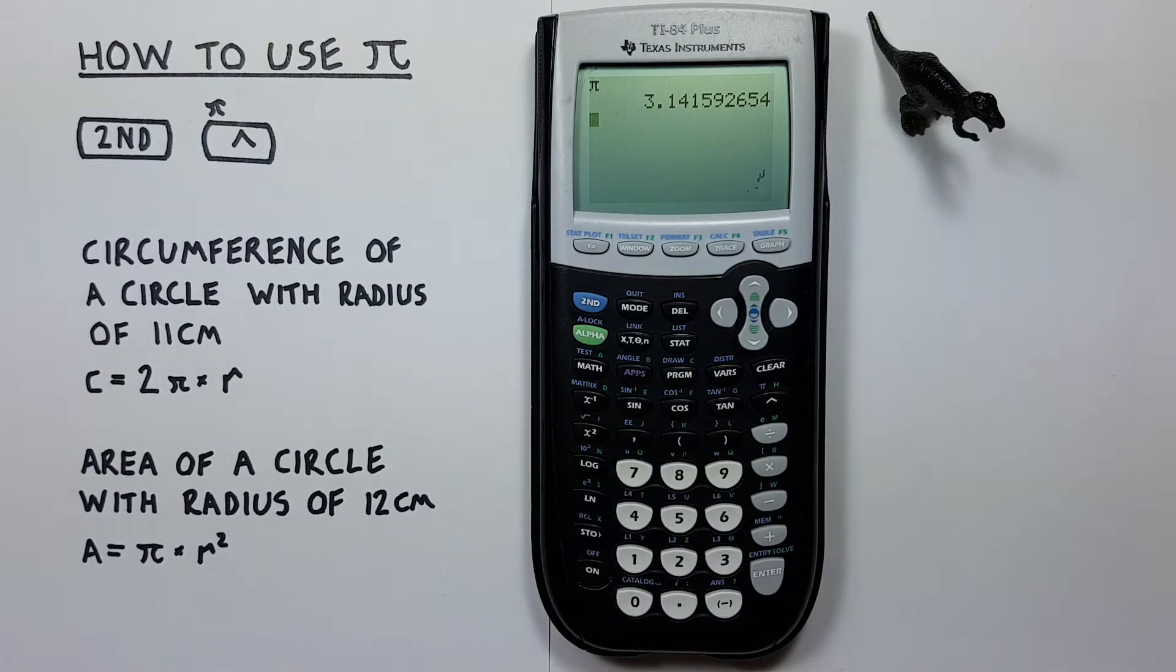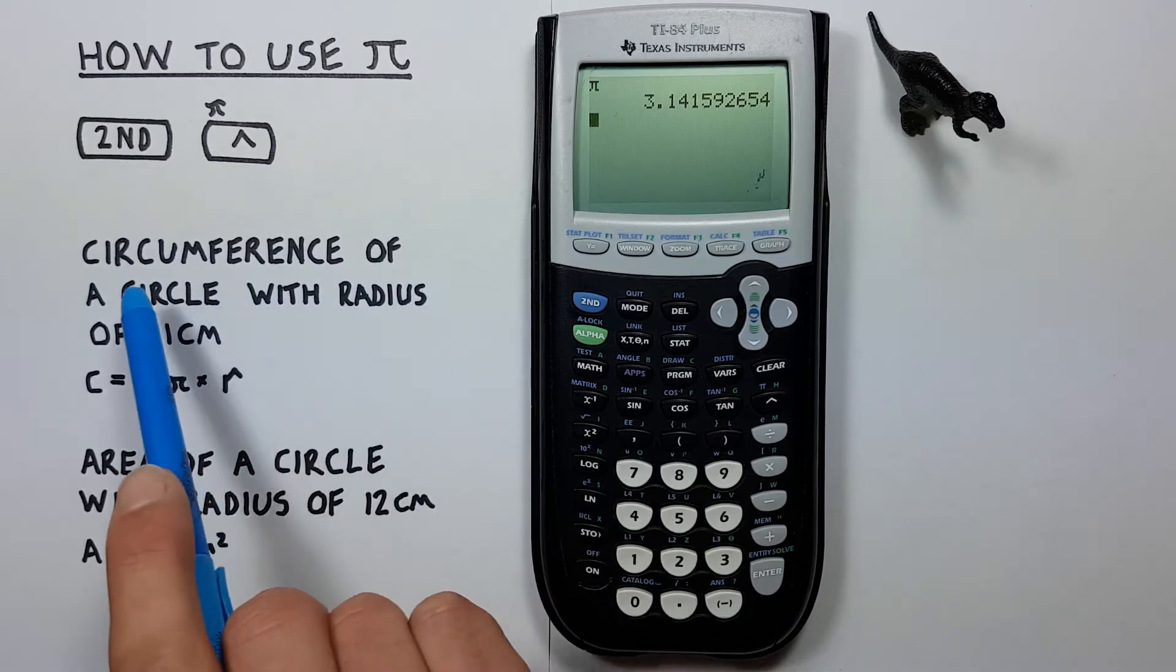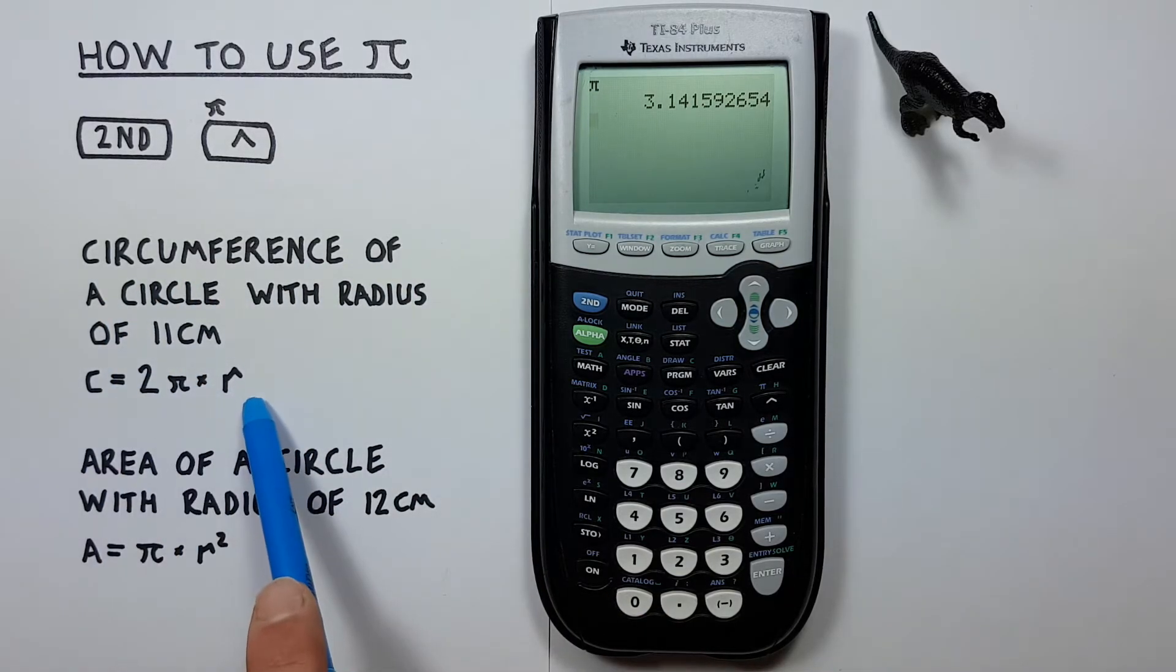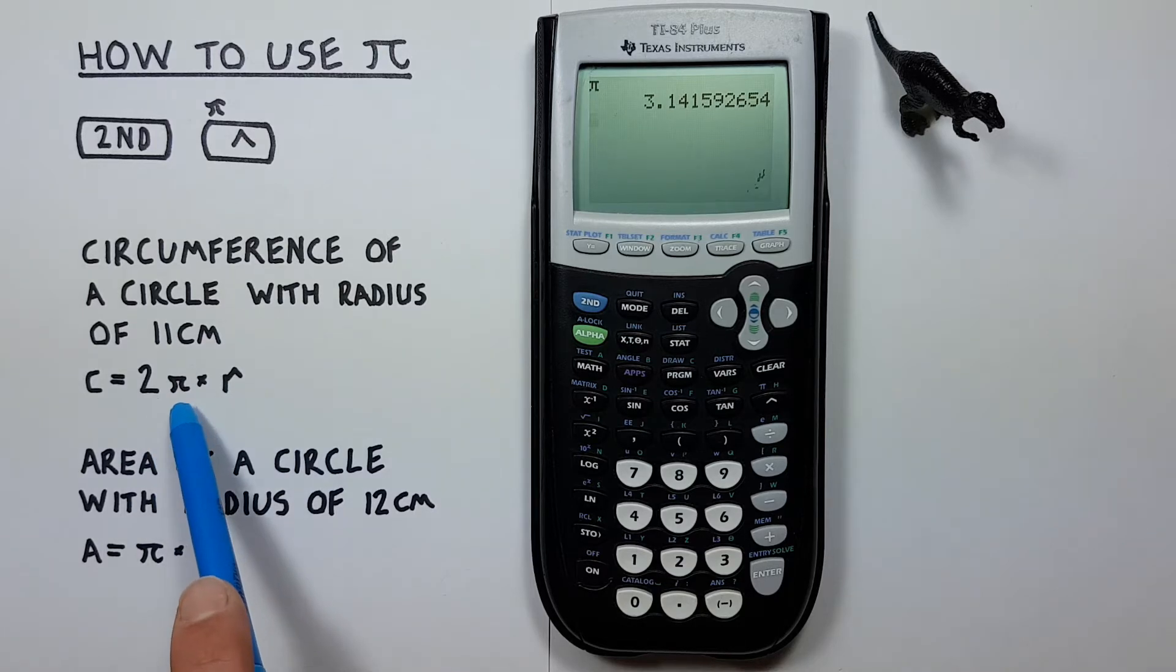This can be helpful with a lot of calculations like for example if we wanted to find the circumference of a circle with the radius of 11 centimeters we would use this formula here. 2 PI times R.